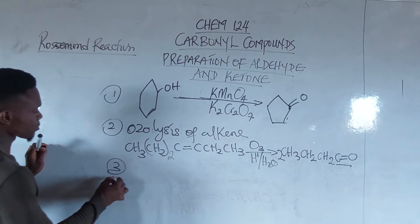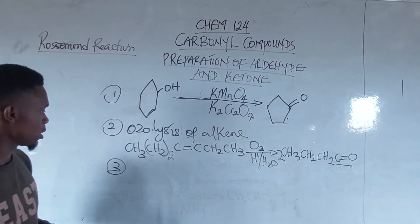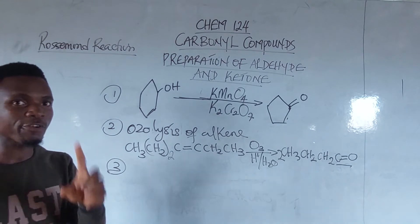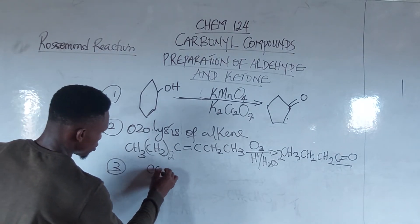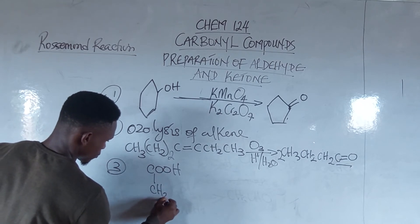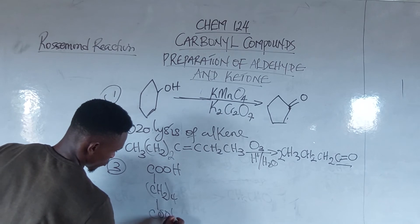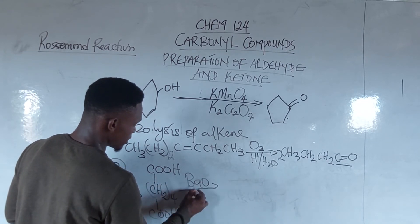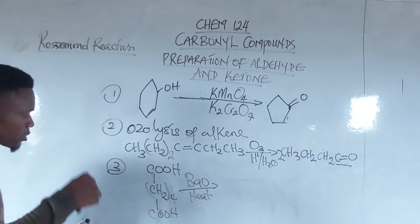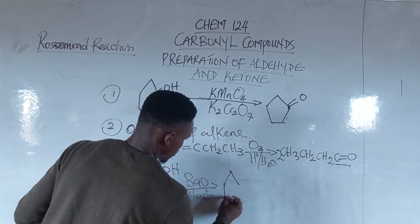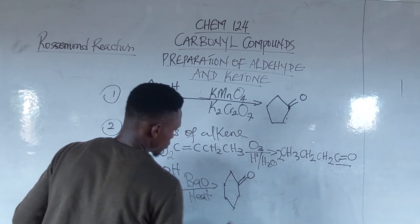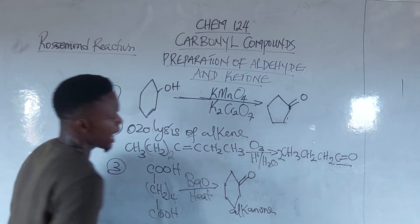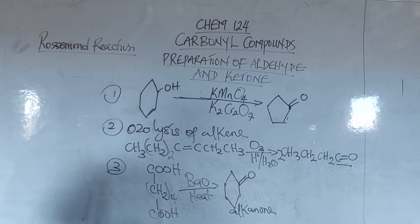Number three: we can also prepare a ketone from a dicarboxylic acid. A dicarboxylic acid in the presence of barium oxide — written as HOOCR-COOH — when heated, will produce an alkanone. An alkanone is also prepared from the Friedel-Crafts reaction.